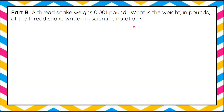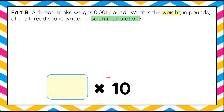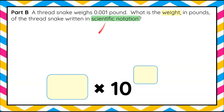Welcome back. So again, we want to know the weight of the thread snake written in scientific notation. I need to have a factor multiplied by a power of 10, so we want to determine the factor and the exponent for our power of 10. We're given this decimal — one one-thousandth of a pound — and we want to write that in scientific notation. We're going to move our decimal point to the right until we have one significant digit to the left of the decimal point. So my factor here is 1.